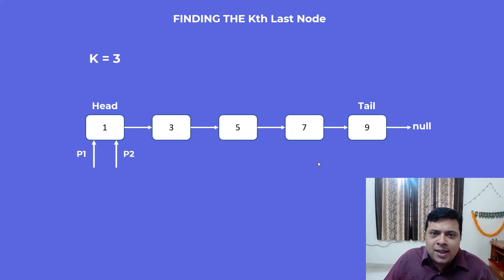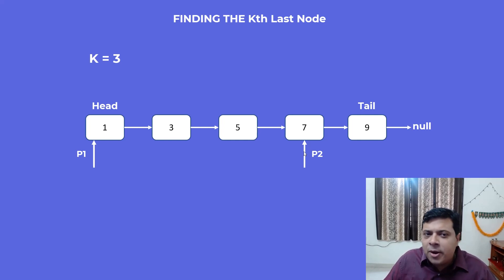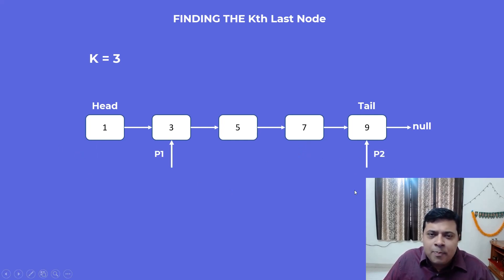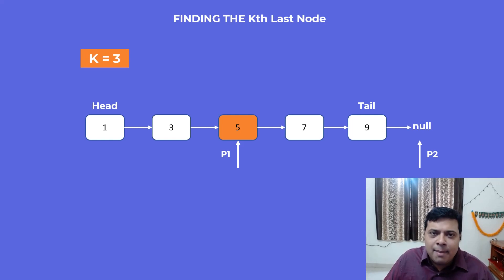Let's take another example where k equals 3, meaning we need to find the third last node. Again we start with p1 and p2 both pointing to the head. This time p2 moves three steps ahead: to 3, then 5, then 7. Now we iterate both pointers until p2 reaches null. We move both one step ahead: p1 reaches 3, p2 reaches 9. p2 is not null, so we iterate again. Now p2 reaches null and p1 is at node 5. We terminate the loop — p1 is at the third last node. We've again found the element in a single pass using two pointers.